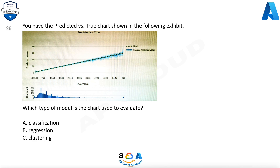Question 28. You have the predicted versus true chart shown in the following exhibit. Which type of model is the chart used to evaluate? A. Classification. B. Regression. C. Clustering.